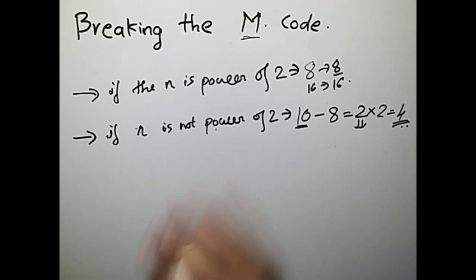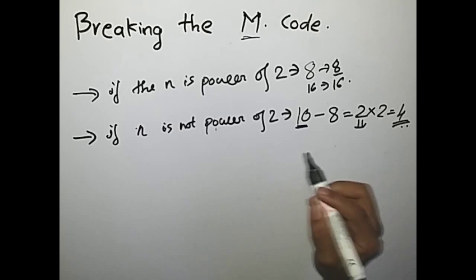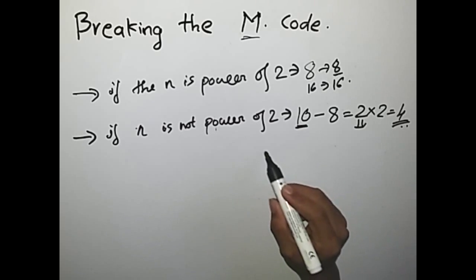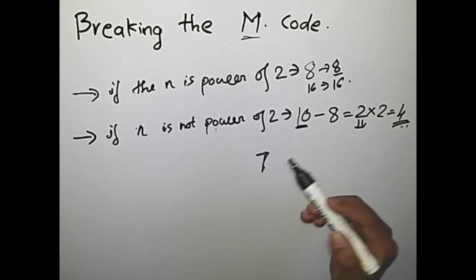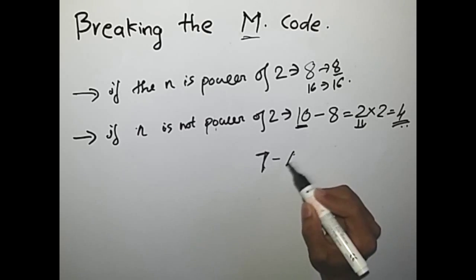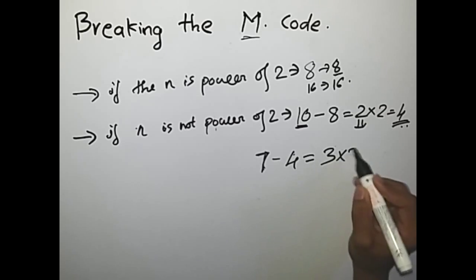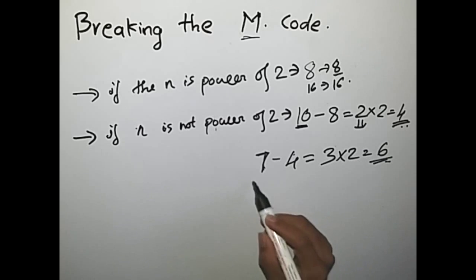So we only have 2 cases. Now let's take another example: 7 cards. The nearest power of 2 less than 7 is 4. The difference is 3, and multiplying by 2 gives 6. So 6 remains at the end, which is pretty much correct.